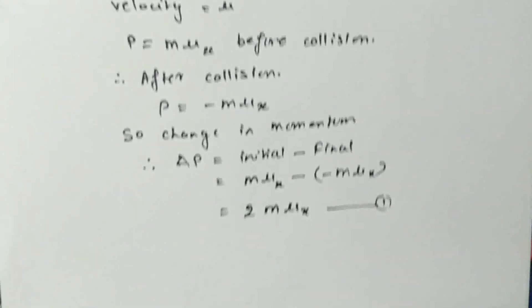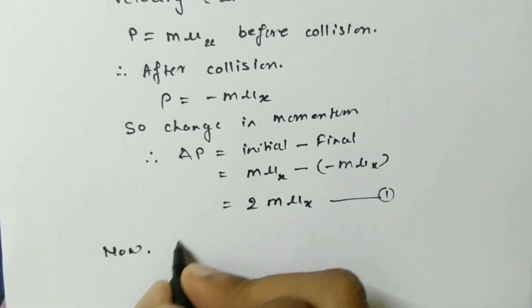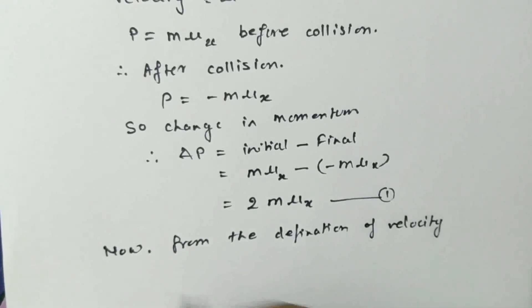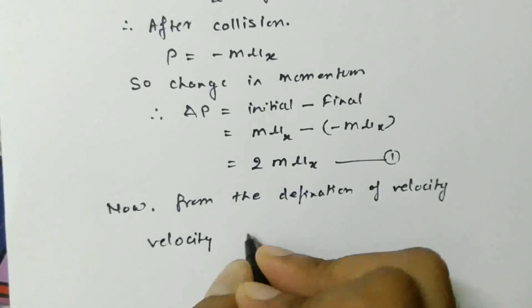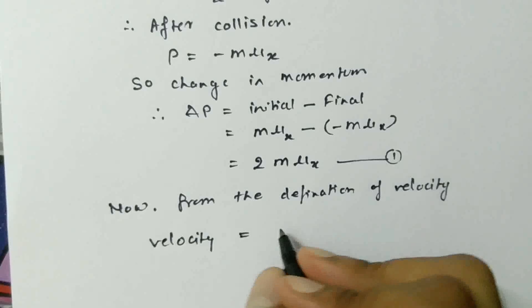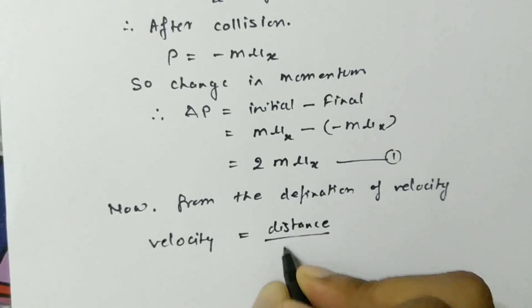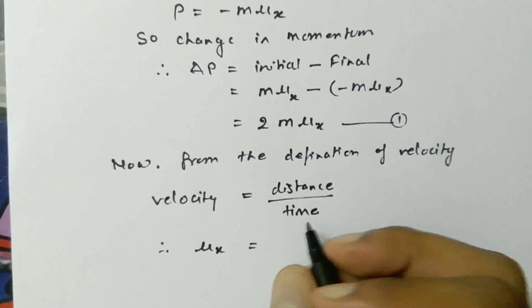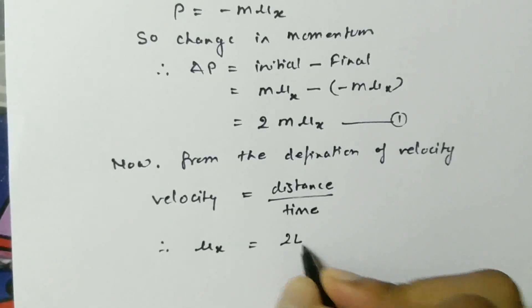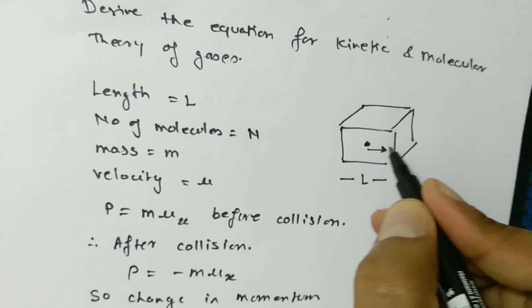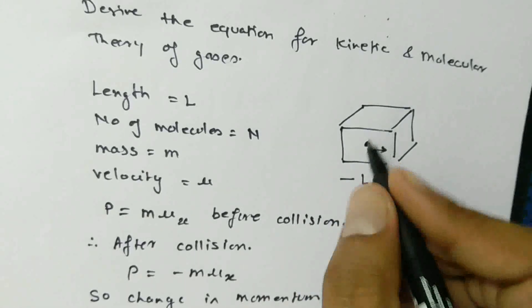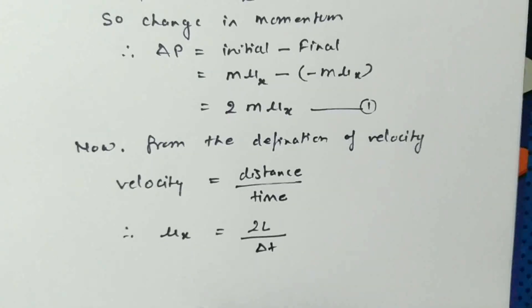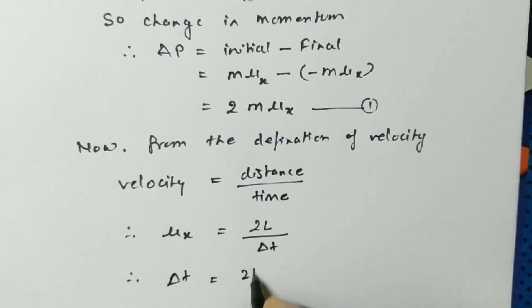From the definition of velocity: velocity equals distance per unit time. So mu_x, the velocity in the X direction, equals distance divided by time. The distance will be 2L, because if the particle is moving in one direction and then coming back to the same position after collision, it is covering 2 times the length of the box. So distance is 2L and time is delta T. Therefore delta T becomes 2L by mu_x. This is equation 2.